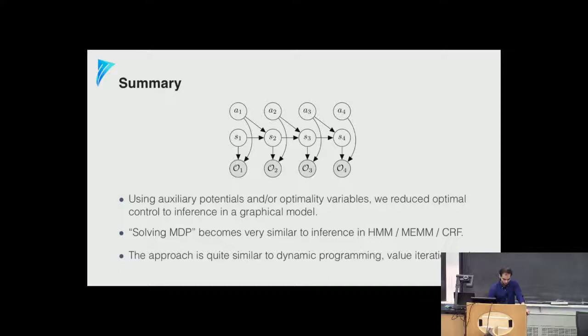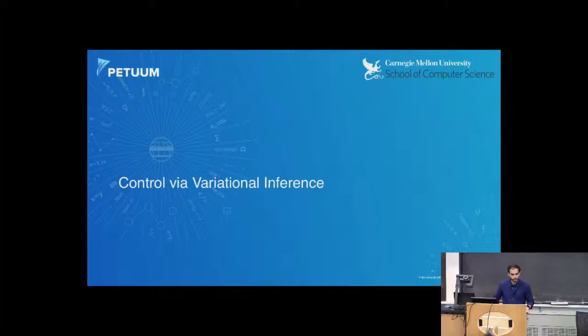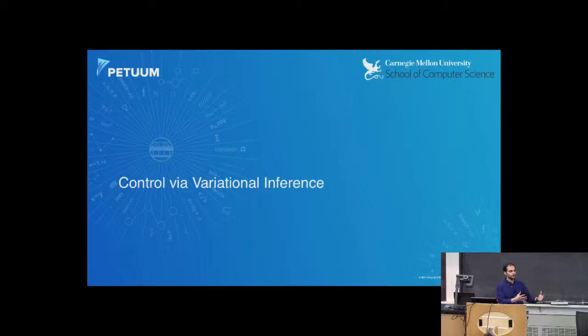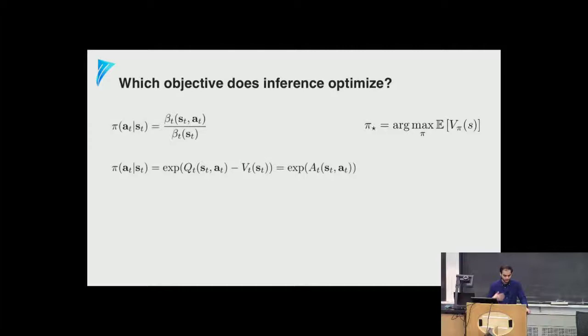Now we move to control via variational inference. There was a problem with optimistic behavior in the stochastic case. The question is: can we fix this, and can we relate the inference procedure with some optimization problem? Reinforcement learning was defined as optimization of a stochastic objective — the sum of expected discounted rewards. Which objective does this inference procedure actually optimize? On one side we have the policy from inference; on the other, the policy from standard RL maximizing expected returns. How are they related?